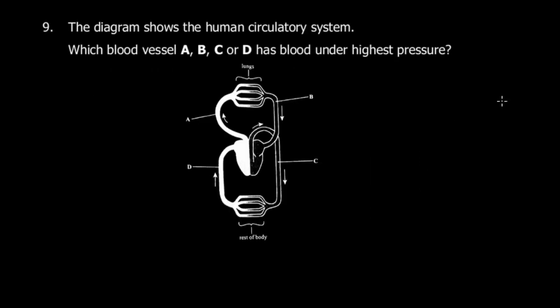Question nine: the diagram shows the human circulatory system. Which blood vessel A, B, C, or D has blood under highest pressure? It has to be the aorta. The aorta pumps blood from the heart to the rest of the body, so you'd expect it has the highest pressure. The answer is C. That's also why it has thick walls.